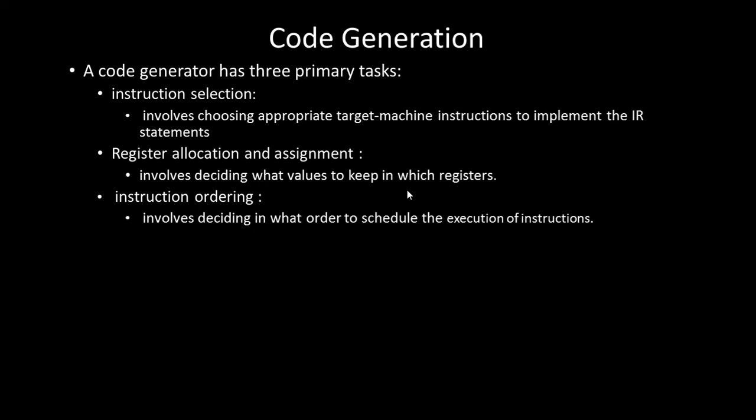The third primary task is instruction ordering — deciding what order to schedule the execution of instructions, whether in looping structures or operations. The three major tasks of the code generator are: instruction selection, register allocation and assignment, and instruction ordering.